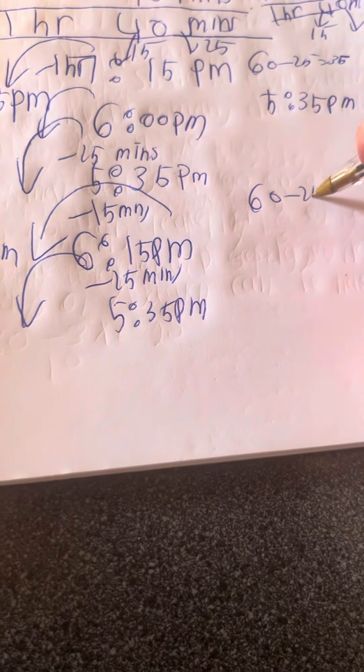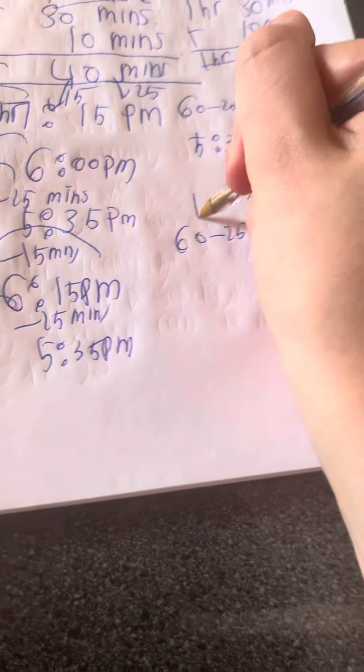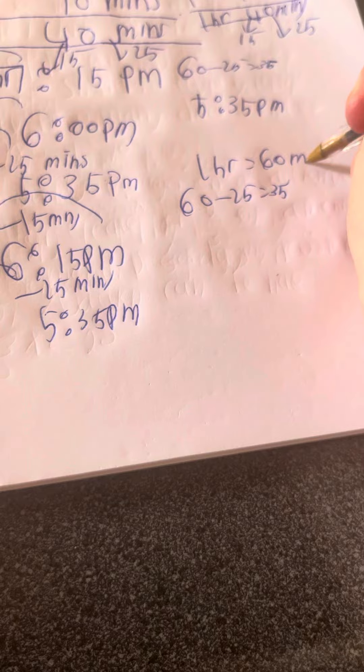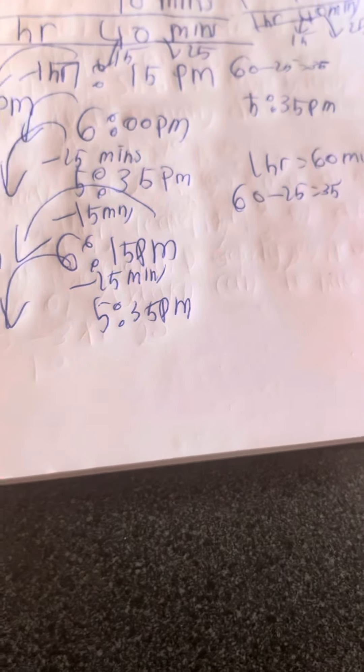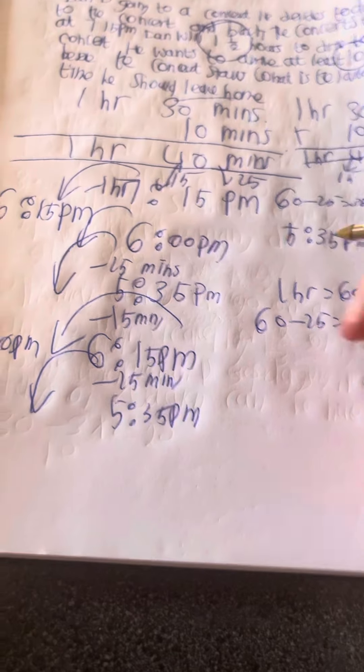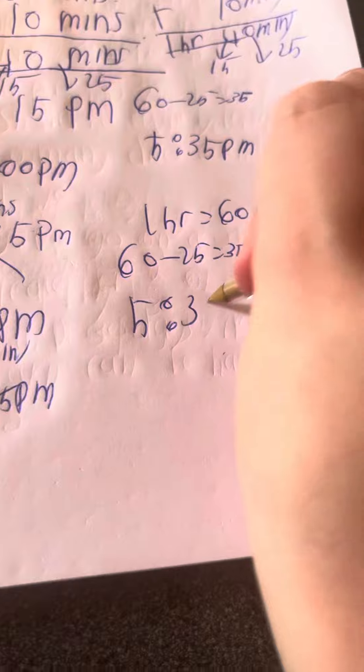Because sixty take away twenty-five is thirty-five, and one hour equals sixty minutes in total. So the answer is 5:35pm.